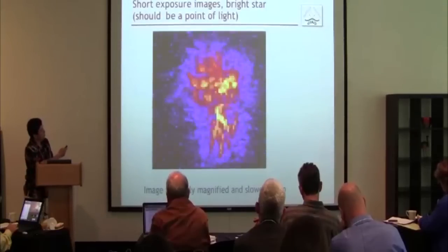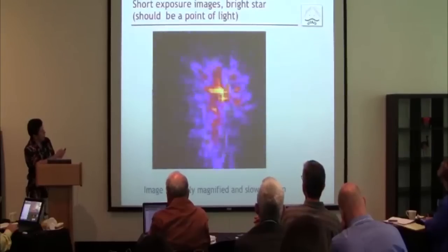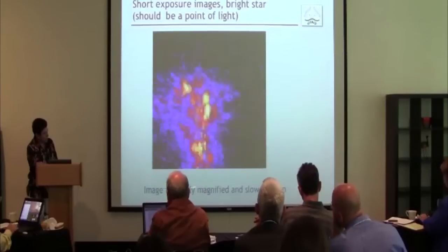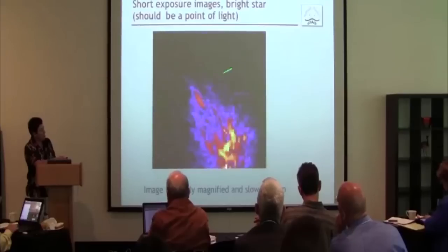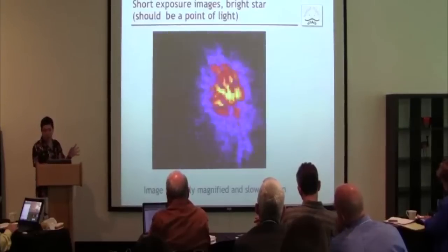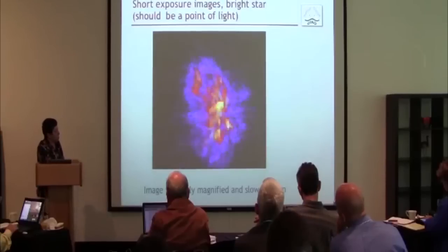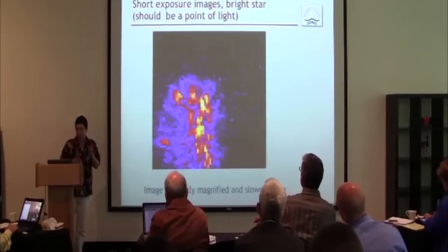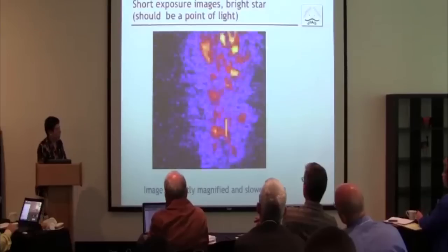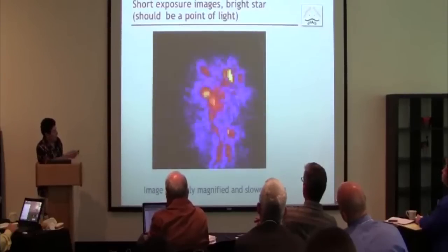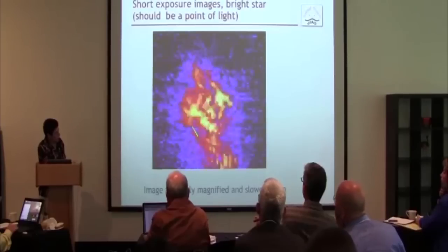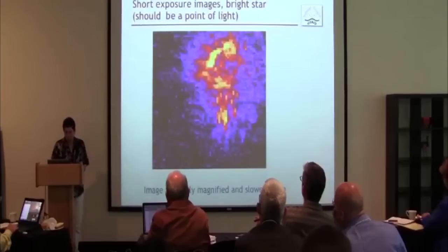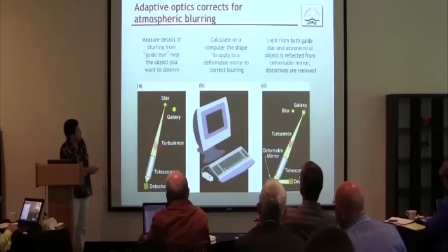This is what a star looks like — the same star as before. It should be a point of light, but I've greatly magnified the image and slowed down the jitter. These changes are taking place because the turbulence in the air is changing. The smearing happens because even in one realization of the turbulence, you're not getting a single point — you're getting all these individual speckles. You can see two things: it's a great big fuzzy image, and it wanders around on the sky.